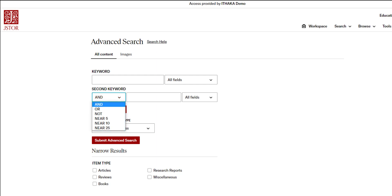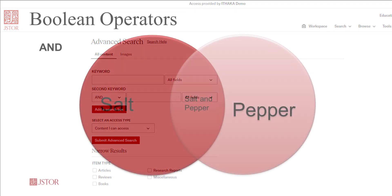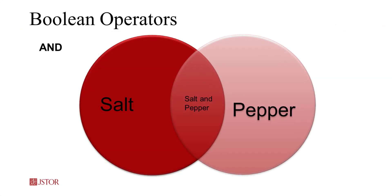Your librarian has the expert knowledge to help you construct a search, but generally here is how each operator works. The operator AND will narrow your search results by telling the search engine to return results that have both search terms present.